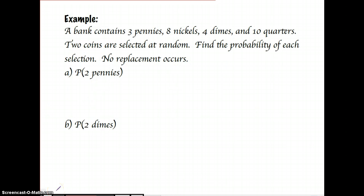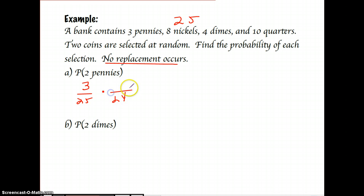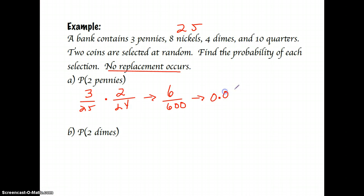Many probability problems involve coins: 3 pennies, 8 nickels, 4 dimes, and 10 quarters — 25 coins total. Rather than picking two at the same time, think of it as picking one and then the other. The probability of selecting two pennies with no replacement: 3/25 times 2/24, which gives a probability of 0.01.